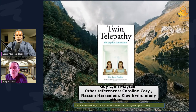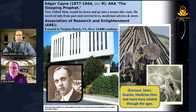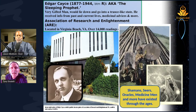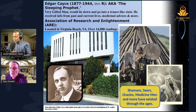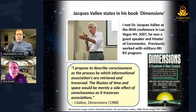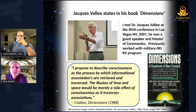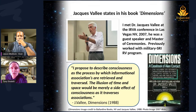Something like twin telepathy — there have been documented cases where twins, miles apart or in different states, would know something had happened to the other sibling. There's some type of neural network highway we're all part of. Edgar Cayce, psychics, shamans, oracles, medicine men — all have had different planes they could communicate through. Jacques Vallée, a ufologist, astrophysicist, and mathematician who worked with the Stanford Research Institute group in the early 1970s, described it as a consciousness type of network. His quote: 'I propose to describe consciousness as the process by which informational associations are retrieved and traversed. The illusion of time and space would be nearly a side effect of consciousness as they traverse the associations to get information.'